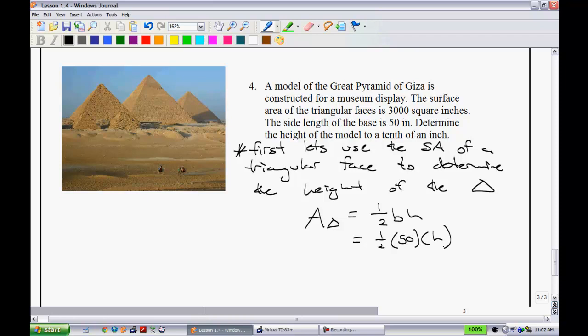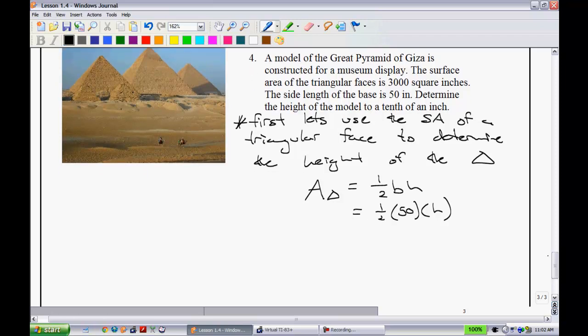And you're probably wondering what I'm going to put in here for the area of the triangle. Well, it tells you that the surface area of the triangular faces is 3,000 square inches. So if we take 3,000 and divide it by 4, that'll tell you what each triangular face is. So 3,000 divided by 4 is not a tough calculation. You get 750.